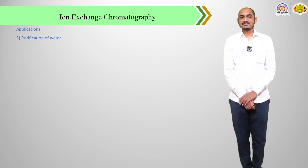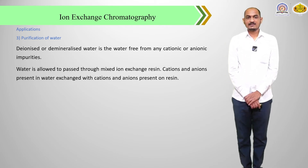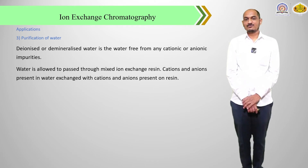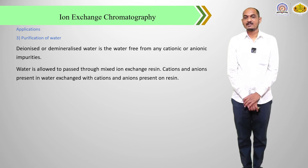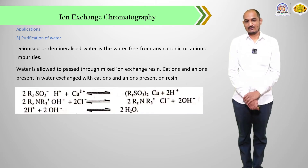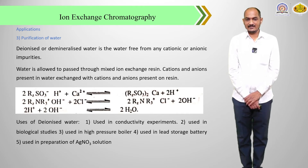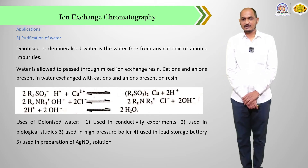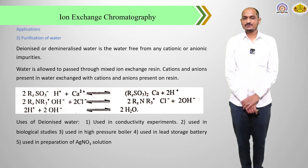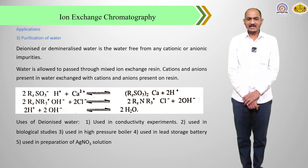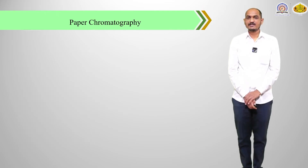The third application of ion exchange chromatography is the purification of water. Deionized or demineralized water is water free from any cationic or anionic impurities. Water is allowed to pass through mixed ion exchange resins. Cations and anions present in water exchange with the ions present on the resin on the chromatographic column. Uses of deionized water include conductivity experiments, biological studies, high pressure boilers, lead storage batteries, and preparation of HgNO₃ solution for different experiments.